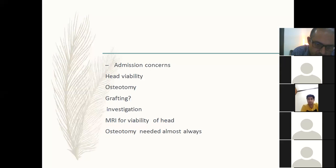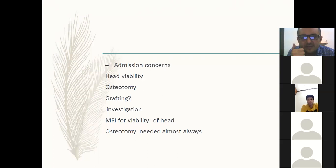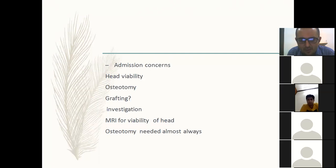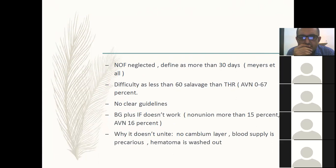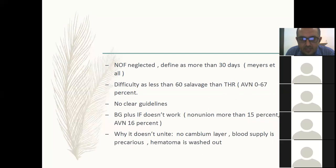He asked what intervention. I said osteotomy or bone grafting — vascularized or non-vascularized. For investigation, I said MRI for head viability. He asked what other investigation; I told him I don't know any other except MRI, though bone scans won't be positive at this time. Osteotomy is always needed. A neglected neck of femur fracture is defined as more than 30 days. About 60% of cases will go into AVN, with no clear guidelines.